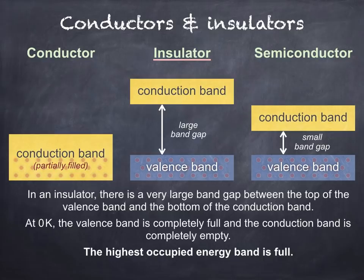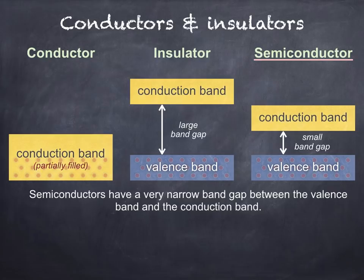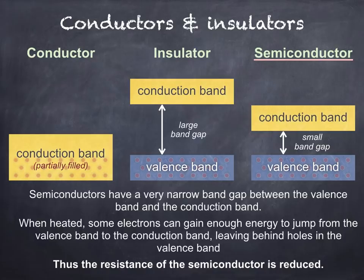For an insulator, the highest occupied energy band — the valence band — is full. Finally, semiconductors have a very narrow band gap between the valence band and the conduction band. Like insulators, at zero Kelvin, the valence band is completely full and the conduction band is completely empty. But since the band gap is so small, as temperature rises, some electrons can gain enough energy to jump from the valence band to the conduction band, leaving behind holes in the valence band. As temperature increases, the resistance of the semiconductor is reduced.